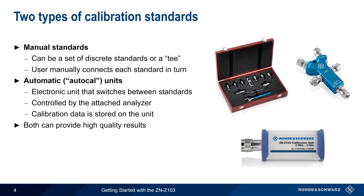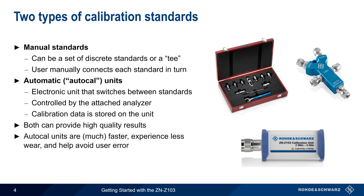When used properly, both manual and automatic calibration units can provide high-quality results, but Auto-Cal units have many advantages. They are much faster than manual calibration, they experience less physical wear, and they help to avoid many common types of user error. That said, Auto-Cal units tend to be somewhat higher cost than manual calibration kits.